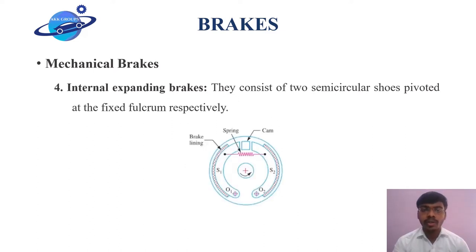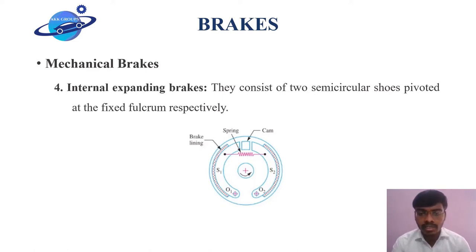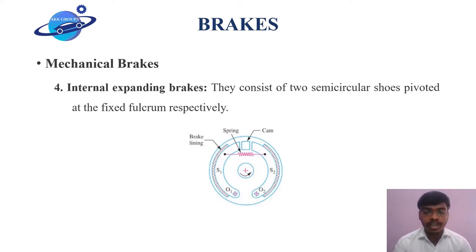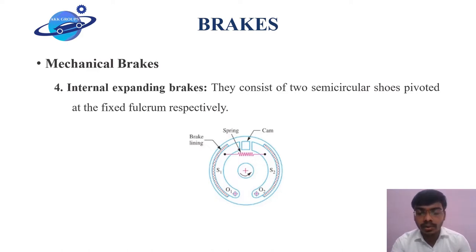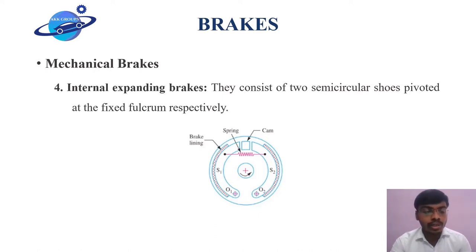Let us have a look at the fourth type in mechanical brakes: internal expanding brakes. It consists of two brake shoes, S1 and S2, as clearly seen in this image. The outer surface of the shoes are lined with frictional material to increase the coefficient of friction and to prevent wearing away of material. Each shoe is pivoted at one end about a fixed fulcrum, that is O1 and O2, and on the other end it is connected to a cam. When the cam rotates, the shoe is pushed outwards against the rim